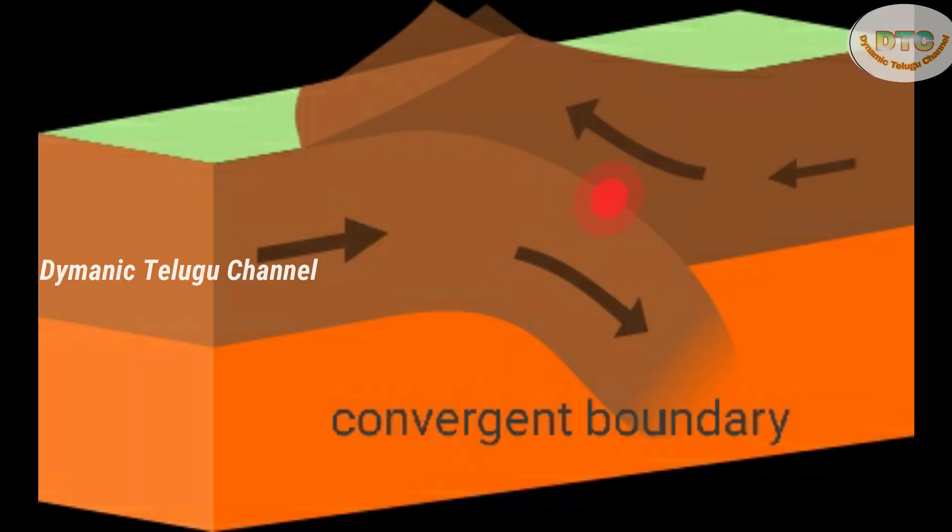Convergent Plate Boundary means two plates move toward each other in opposite directions, resulting in a collision. There are three types of convergent boundaries.